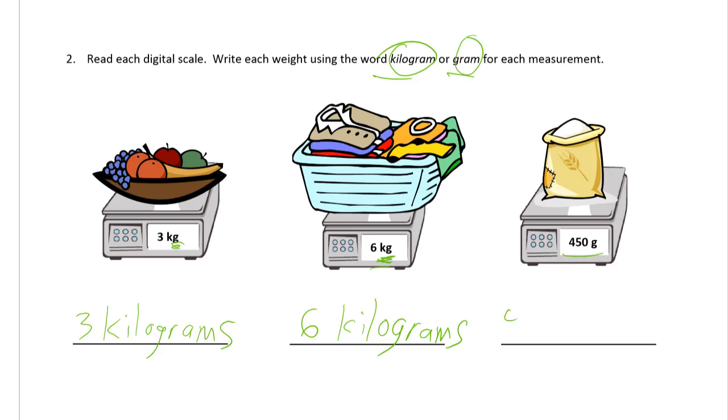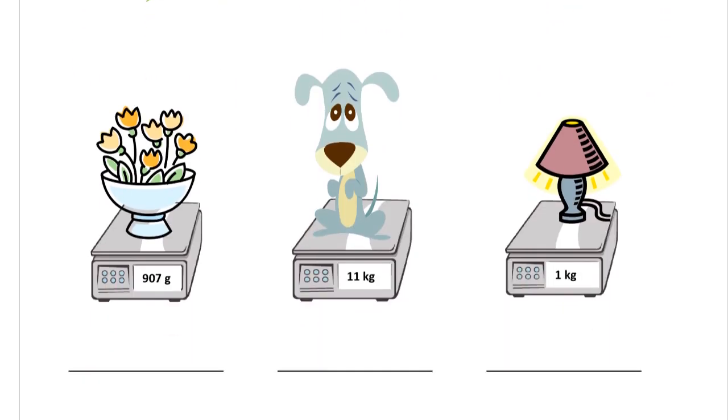And this is 450. And this reminds you of unit form that you saw in second grade where you're writing tens, hundreds with a combination of numbers and words. This is because we're writing units. 450 grams. Here's our next one. Flowers. We have 907. These are grams. So it's 907. And the unit is grams.